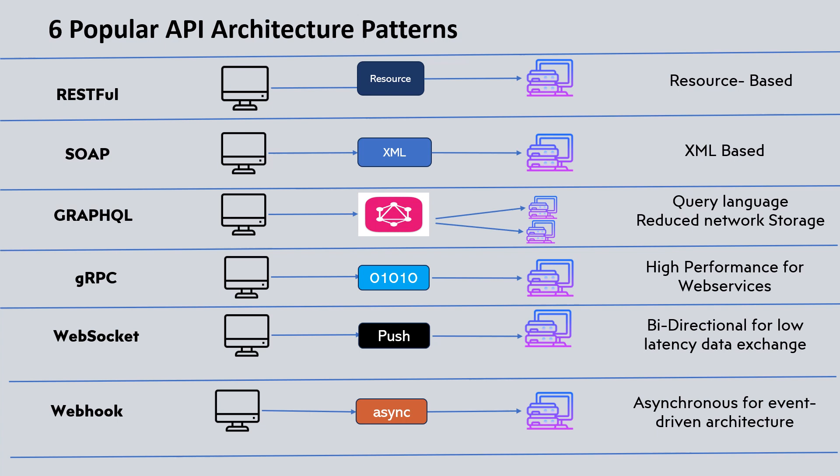Hello, all. Welcome to TechVisces. In this video, I will talk about six popular API architectural patterns: RESTful, SOAP, GraphQL, GRPC, WebSocket, and Webhook.